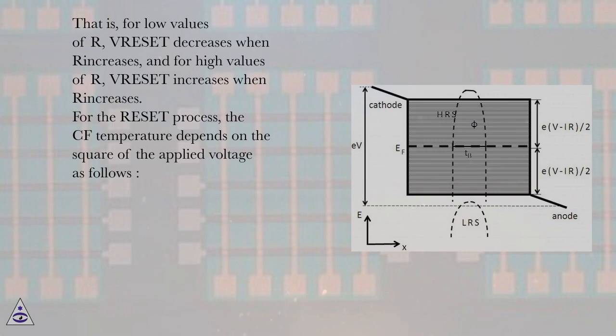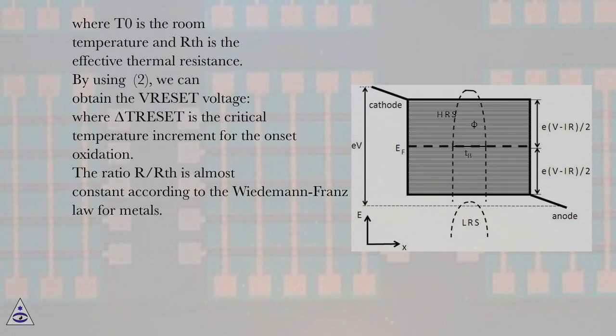For the reset process, the CF temperature depends on the square of the applied voltage as follows, where T0 is the room temperature and RTH is the effective thermal resistance. By using equation 2, we can obtain the VRESET voltage, where delta T reset is the critical temperature increment for the onset oxidation.